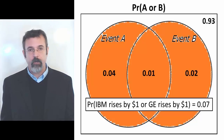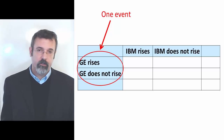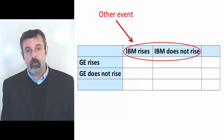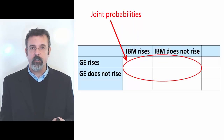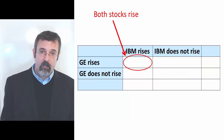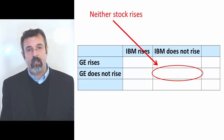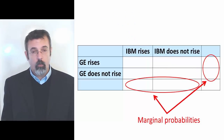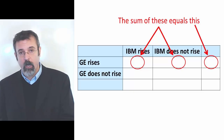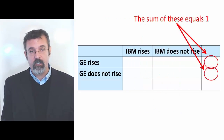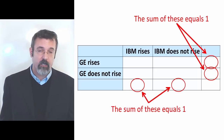An alternate way to organize probability problems is by using a probability table. This probability table shows two events. On the left margin, we have one event — the price of GE stock rising versus not rising. Across the top margin, we have the other event — the price of IBM stock rising or not rising. The four cells in the body of the table represent joint probabilities. The top left cell is the probability of both stocks rising, and the bottom right cell is the probability of neither stock rising. The cells on the right and bottom margins are marginal probabilities, obtained by adding up the joint probabilities. Adding joint probabilities horizontally gives marginal probabilities for GE stock; adding vertically gives marginal probabilities for IBM stock. Both sets of marginal probabilities must add to 1.